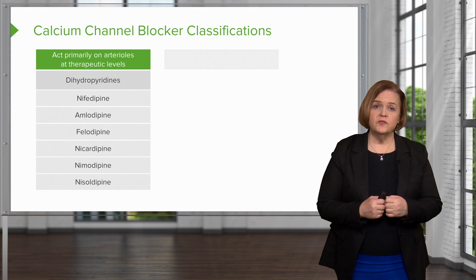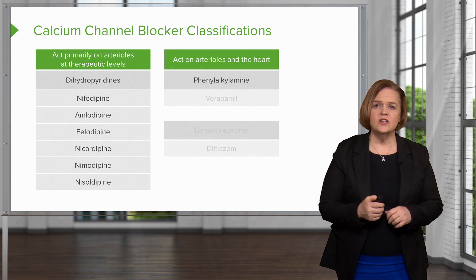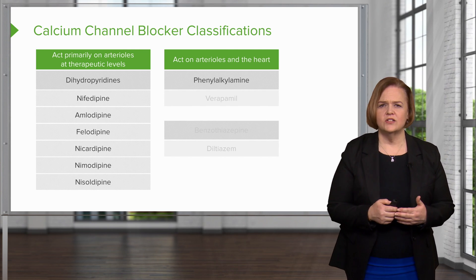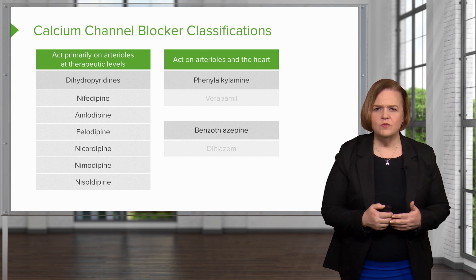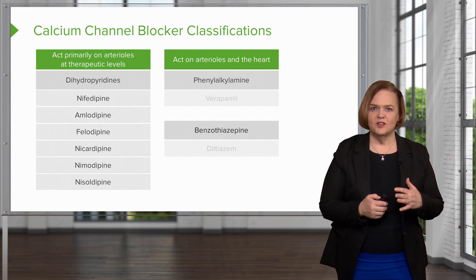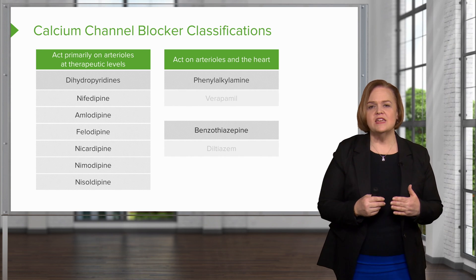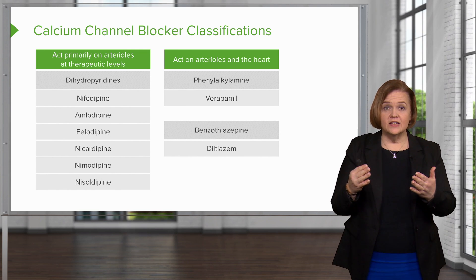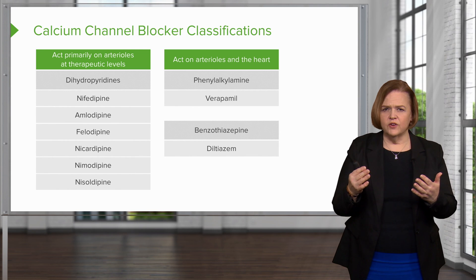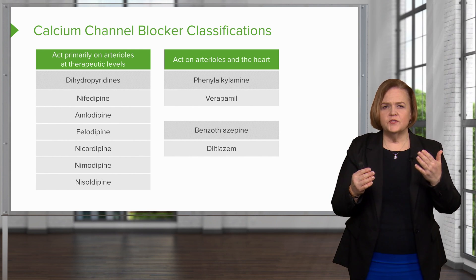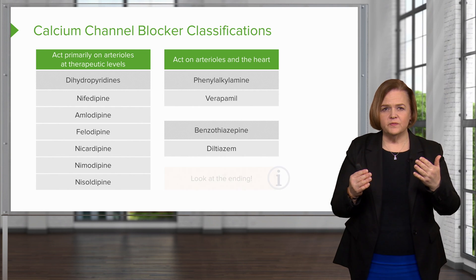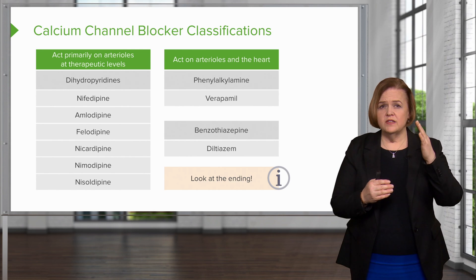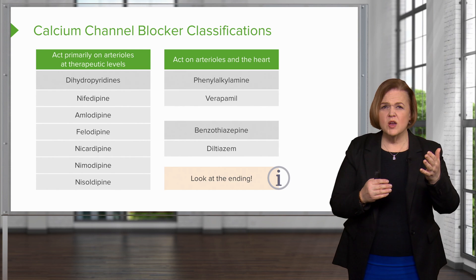Let me introduce you to our first family, the D's. We also have two other families: the P's and the B's, which act on the peripheral arteries and the heart. Now when looking at a long list like this and thinking how am I ever going to keep this straight — look at the last four letters of all the ones in the D family. They all end in P-I-N-E. So I can remember the ones that end in -pine are the ones that act primarily on the arteries.